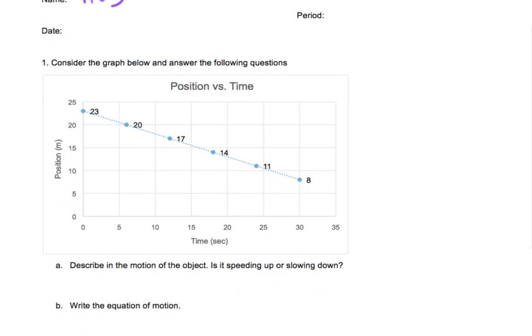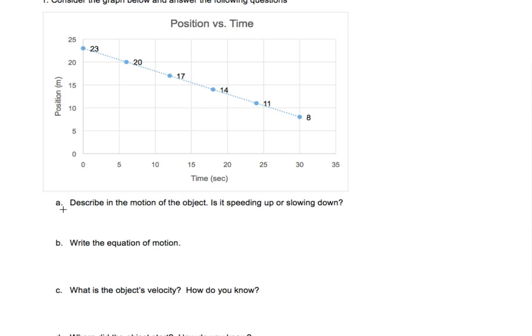So for example, we want to describe the motion in words. Is it speeding up or slowing down? There, we're going to actually be dealing with reading graphs, which is standard 4. Write the equation of motion. Well, we're going to need to do two things there. We're going to need to calculate, which is standard 3. And we're going to need to read the graph, which is standard 4.